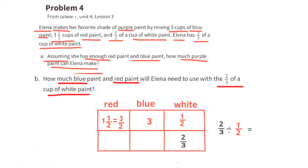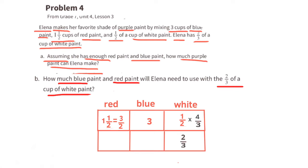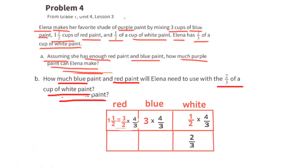Part b: how much blue and red paint will Elena need with the two-thirds cup of white? One-half cup of white times four-thirds equals two-thirds cup. Three cups of blue times four-thirds equals twelve-thirds, or 4 cups of blue paint. One and a half cups of red times four-thirds equals twelve-sixths, or 2 cups of red paint.